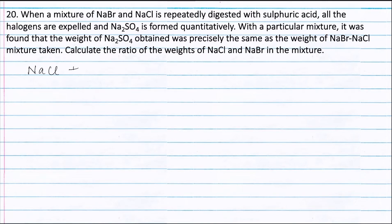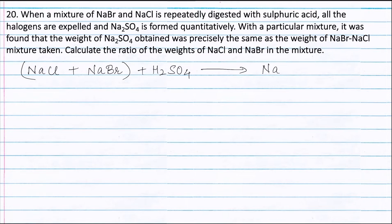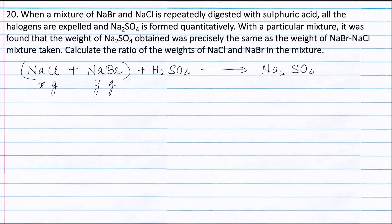NaCl and NaBr react with H₂SO₄ to form Na₂SO₄. Let the weight of NaCl be X grams and the weight of NaBr be Y grams. As given in the question, NaCl and NaBr react with H₂SO₄ to form Na₂SO₄. Therefore, the total weight of Na₂SO₄ will be X plus Y grams.